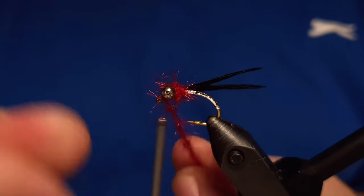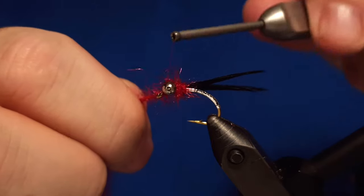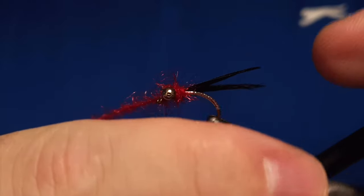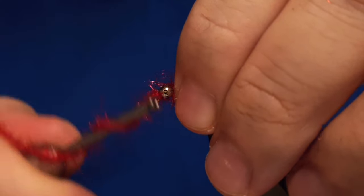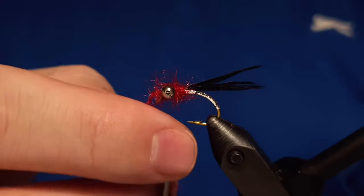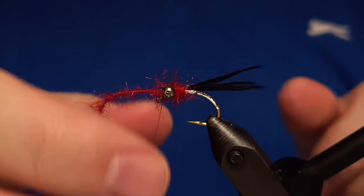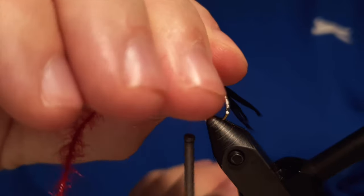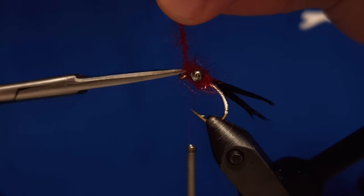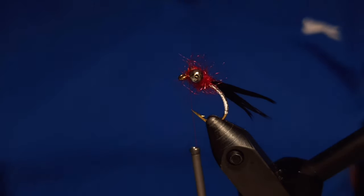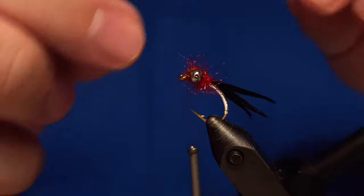Get the thread to the eye of the hook and wrap it around. Then we secure the brush in its place and trim off the rest of the brush. It's nice to place the fly like this in the vise because we are going to make the knot.